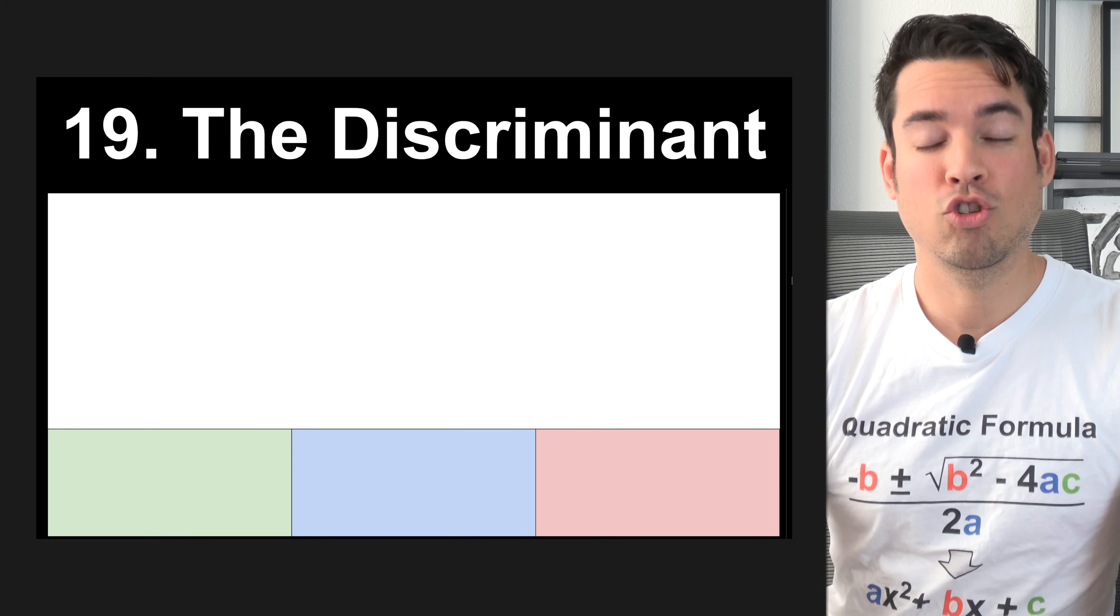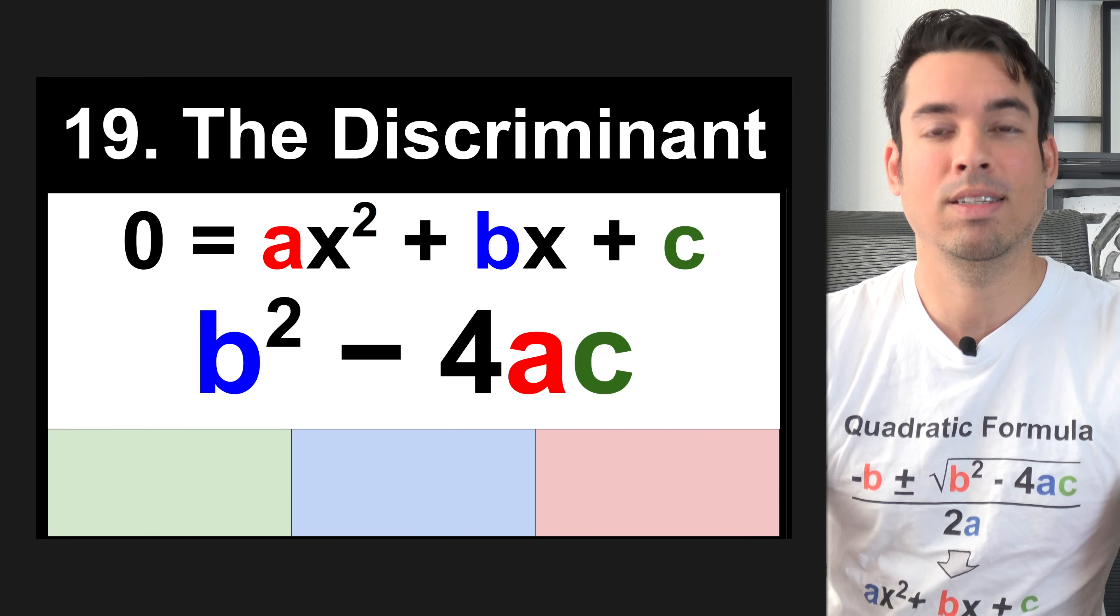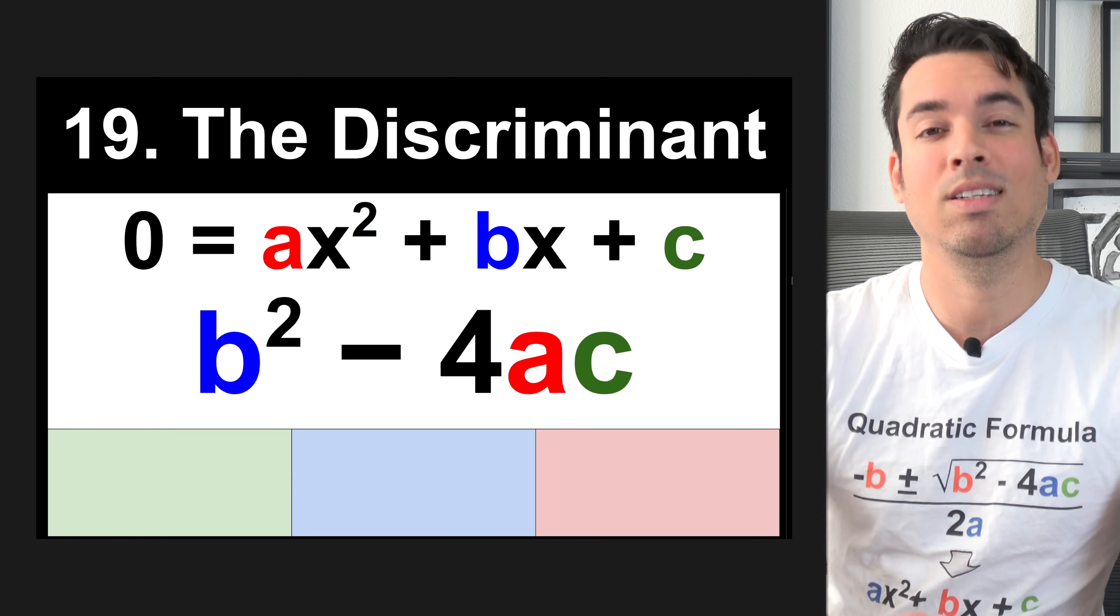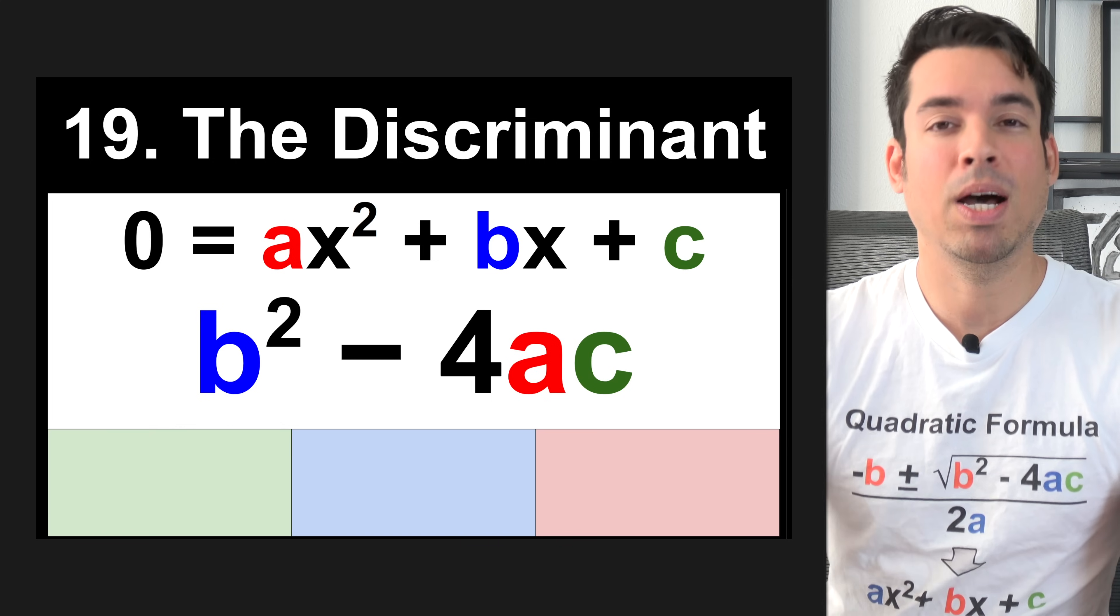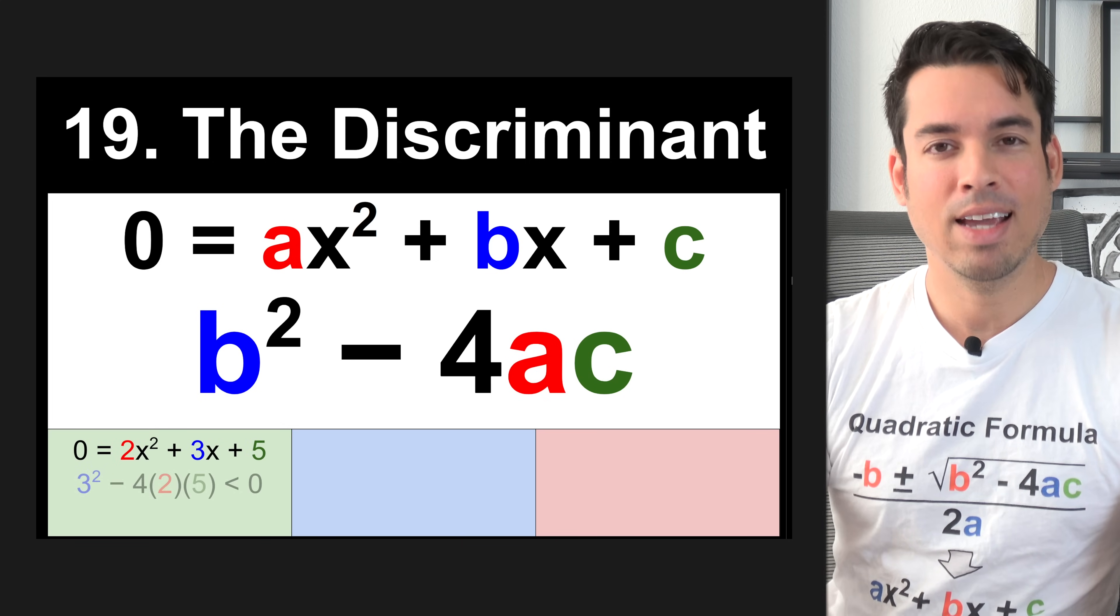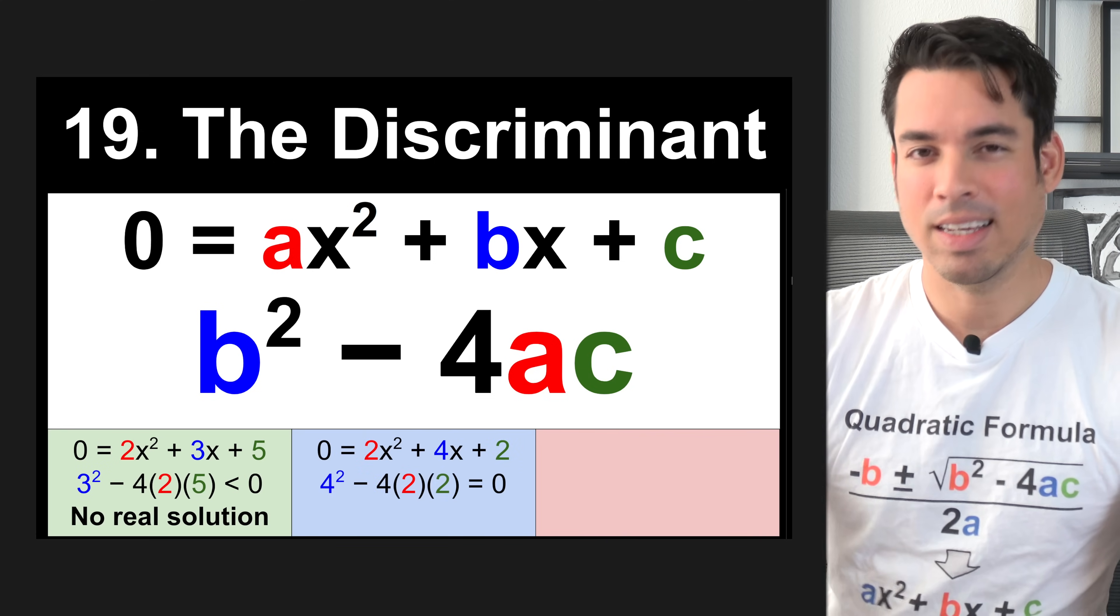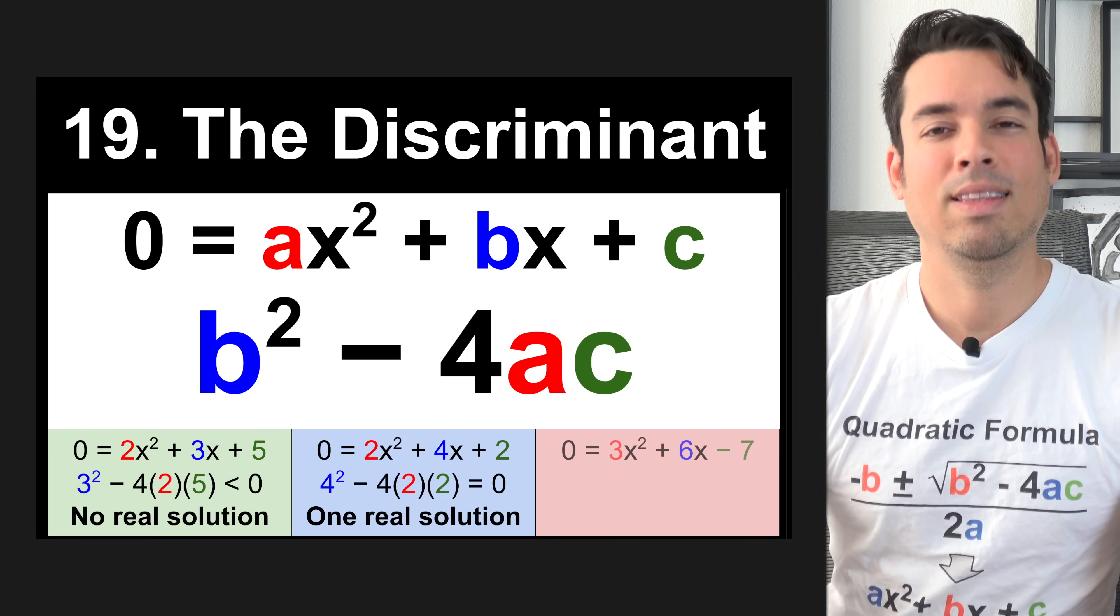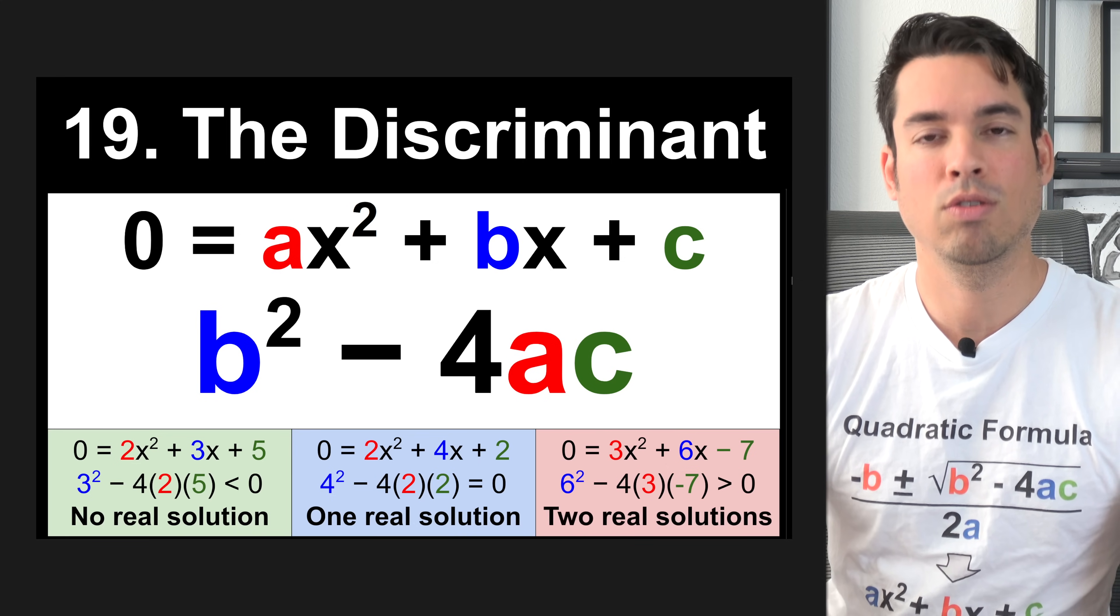Next, we have the discriminant for a quadratic. The formula is b squared minus 4ac. You'll probably recognize this from the quadratic formula because it is the component that is under the square root in the quadratic formula. The discriminant is really helpful for gaining some insights about the solutions of a quadratic. For this example, the discriminant is actually negative, which means that there are no real solutions. In this example, the discriminant is equal to zero, which means there is one real solution. Finally, in this example, the discriminant is greater than zero, which means there are two unique real solutions.